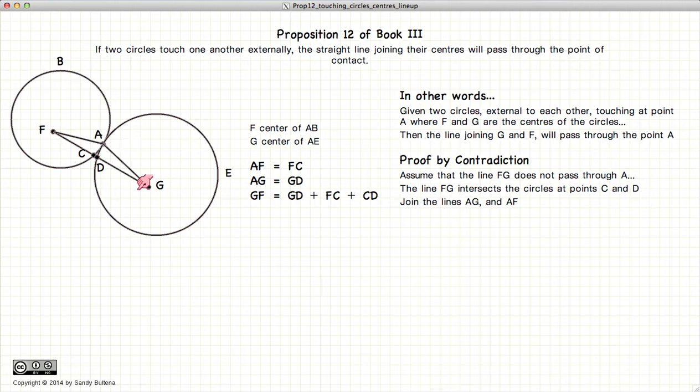And we have that GF is equal to GD plus this little bit CD plus CF. So here's our equation for GF.